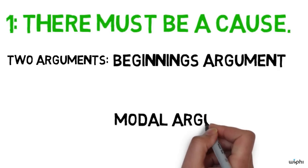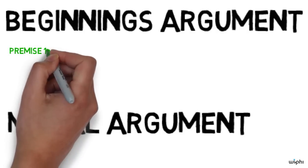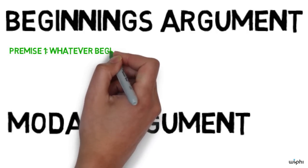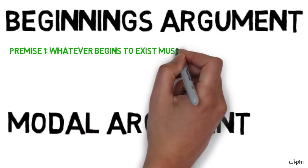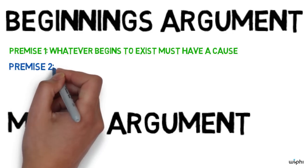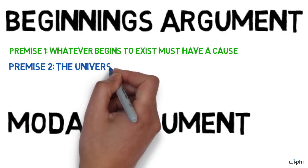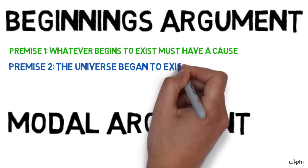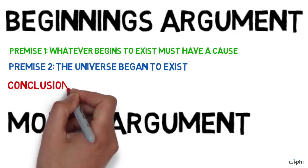The beginnings argument is that whatever begins to exist must have a cause. The universe began to exist, therefore the universe must have a cause. Two premises and a conclusion. A very simple direct argument, but one with potentially profound implications.